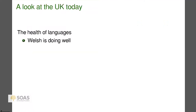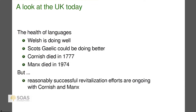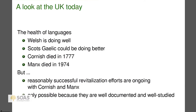Looking briefly at how things are going in the UK: Welsh is doing well, Scots Gaelic could be doing better, Cornish died in 1777, and Manx died in 1974. But there are revitalization efforts going on with Cornish and Manx. Cornish and Manx have been able to do revitalization because the languages were well studied and well documented.